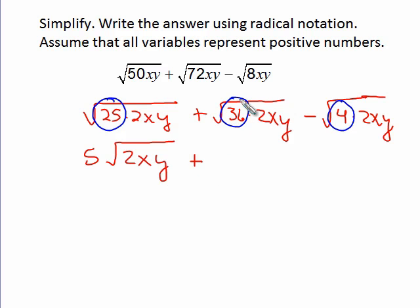The next term—I can take the square root of 36 separately, which is 6. But there's no perfect squares left again, so I have 2xy. And then finally, I have the square root of 4, which is 2, and I still have the square root of 2xy left.